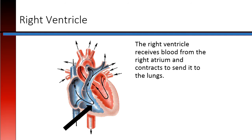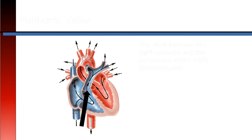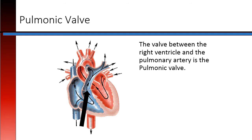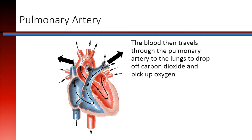The right ventricle receives blood from the right atrium and contracts to send it to the lungs. The pulmonic valve lies between the right ventricle and the pulmonary artery. The blood then travels through the pulmonary artery to the lungs to drop off carbon dioxide and pick up oxygen.